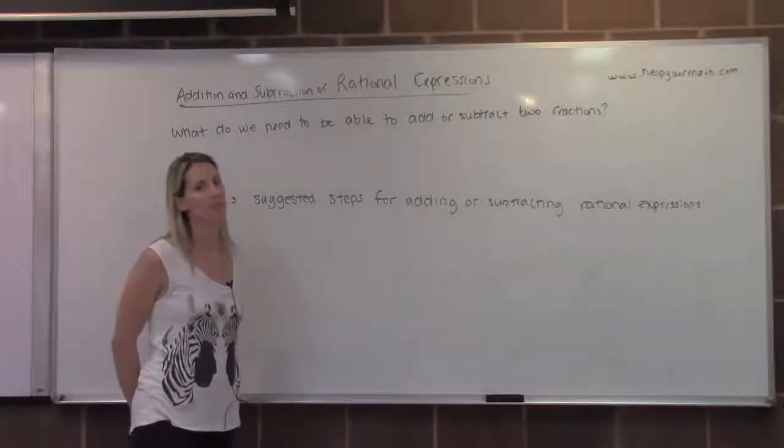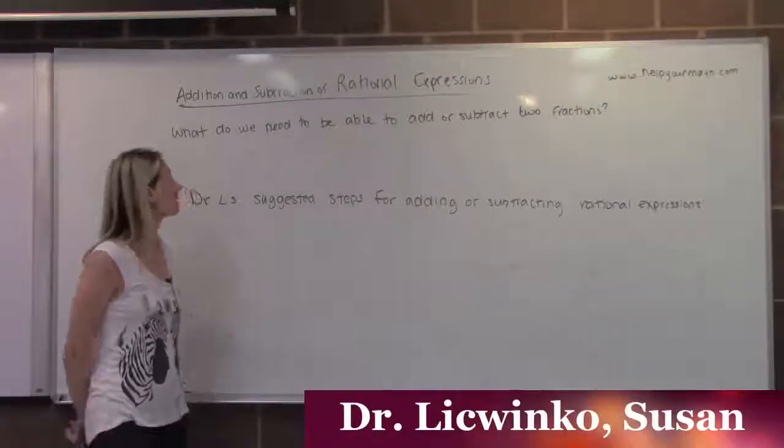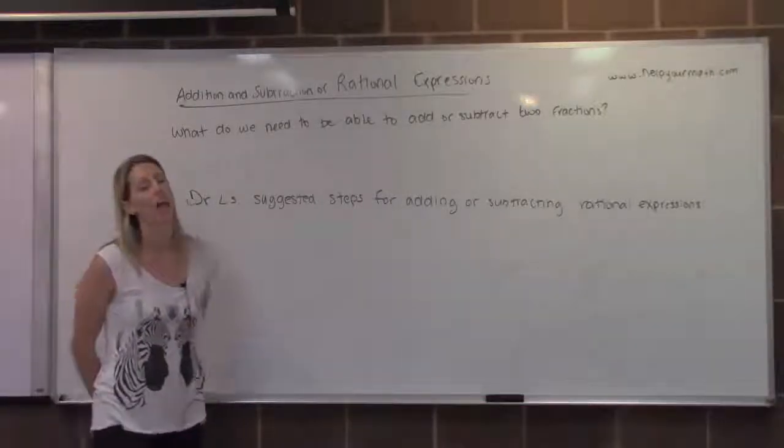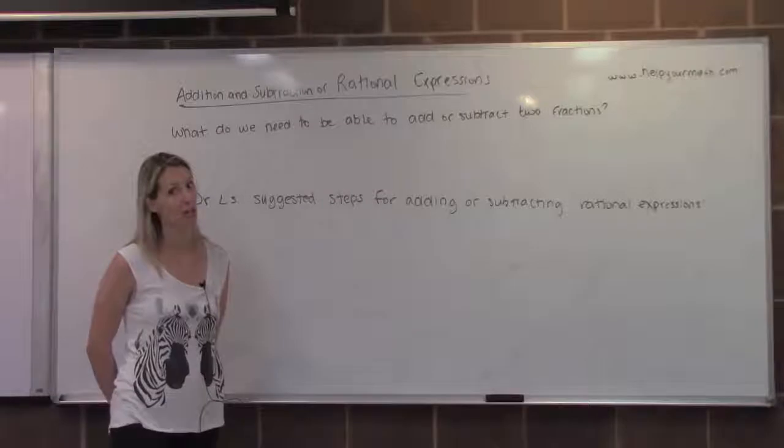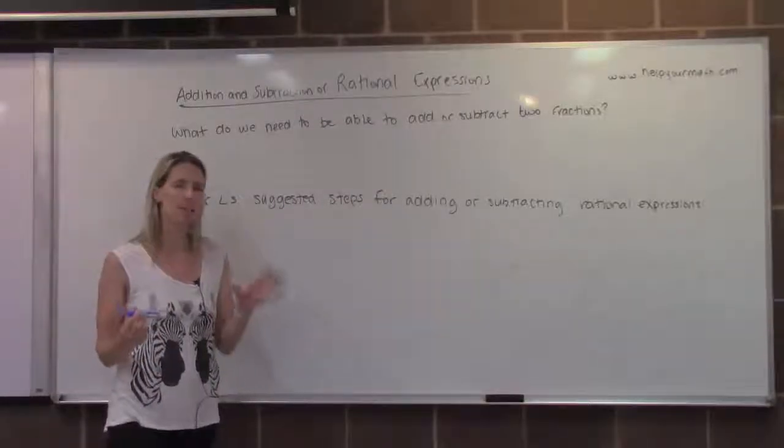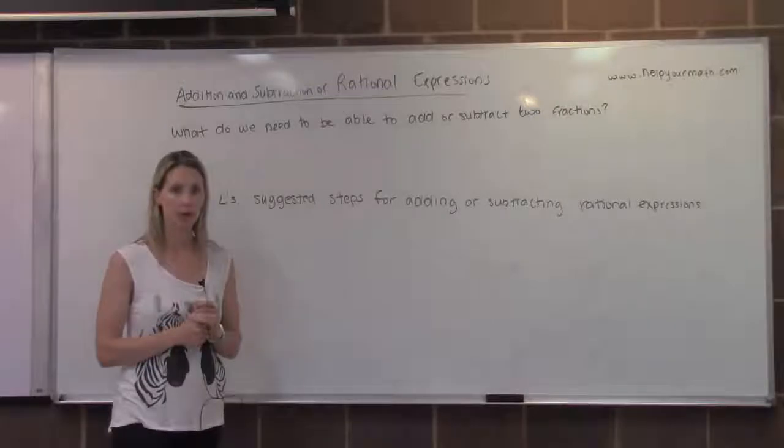This is an introduction to adding and subtracting rational expressions. So first of all, what do we need in order to be able to add or subtract two fractions, or two rational expressions for that matter? Rational expressions are fractions. So what do we need if we're going to add or subtract two fractions?